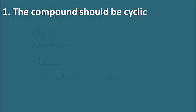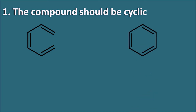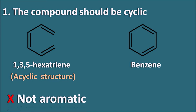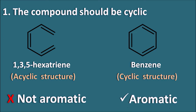Let us start with the first criteria — the compound should be cyclic. Consider two structures: 1,3,5-hexatriene and benzene. 1,3,5-hexatriene is an acyclic structure — it has an open chain — therefore it is not aromatic. Benzene, on the other hand, is a cyclic structure, so it is an aromatic compound.